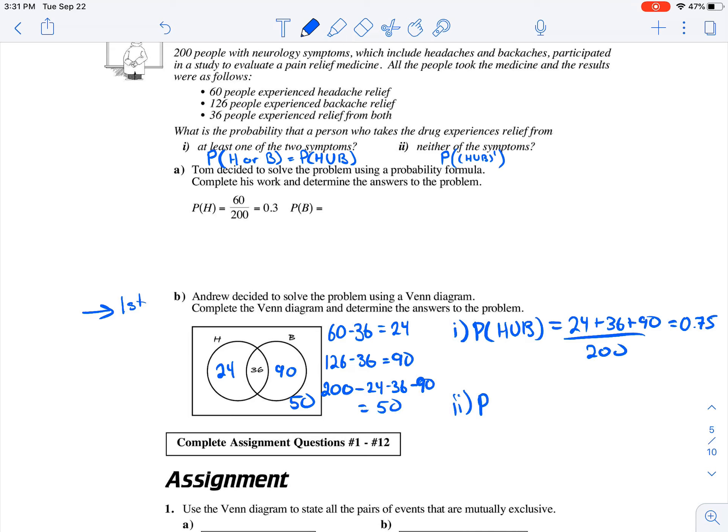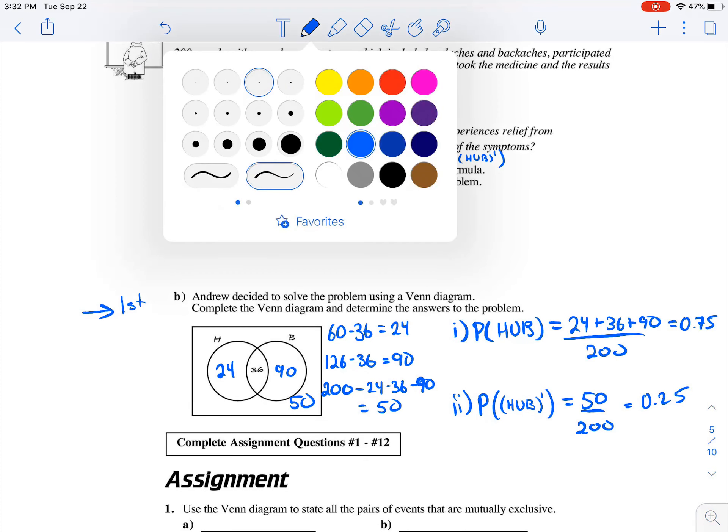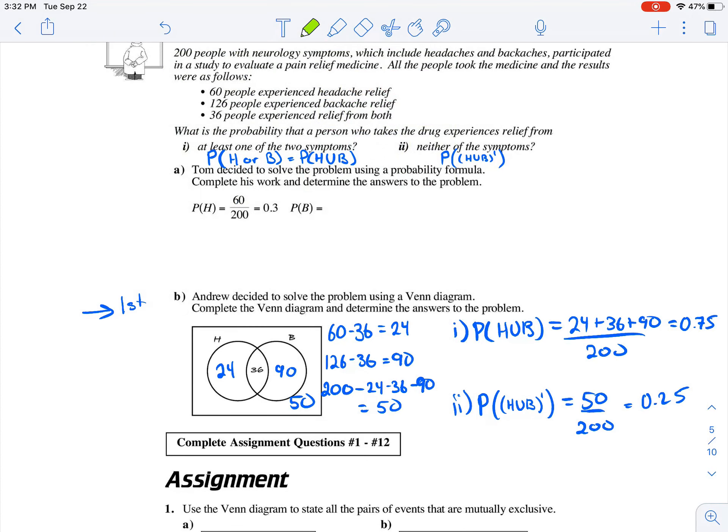Now part two, that was neither of the symptoms, so that's just the complement of the union of the two, which is going to be 50 all over 200, which equals 0.25. And of course, both of those sum to one because the probability of complementary events will always sum to one. So let's take a look at how we could approach this question using formulas.